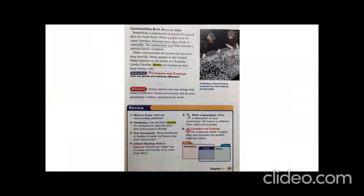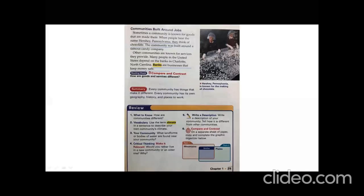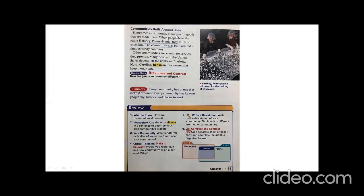Now on this page, we've already spoken about it, that communities are built around jobs. But I definitely want to read this out because it is one yummy paragraph. Sometimes a community is known for goods that are made there. When people hear the name Hershey, Pennsylvania, they think of chocolate. The community is built around a famous candy company. So sometimes communities are built around their products, things that they produce.